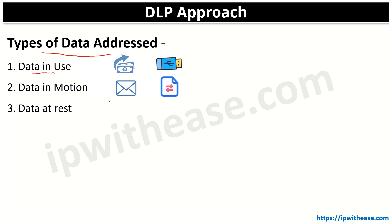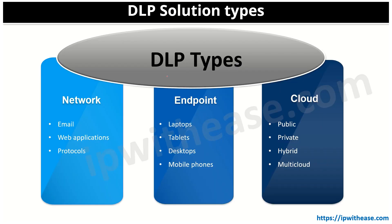Finally, we have data at rest. This includes archived data or data stored on a hard drive. Though data at rest is less vulnerable, it is a highly valuable asset for hackers. Examples include data stored in databases, cloud storage, and similar repositories.